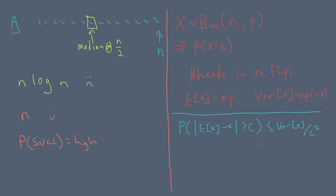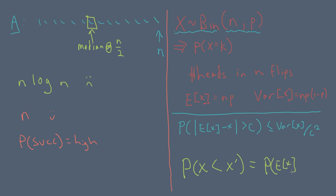In analyzing our randomized algorithm, we will find that the probability of failure is equivalent to the probability that a particular binomial random variable generated by the algorithm takes on values less than a certain amount. We will be able to translate that probability into a deviation from the expectation of the binomial random variable, and we'll be able to directly use Chebyshev's inequality.